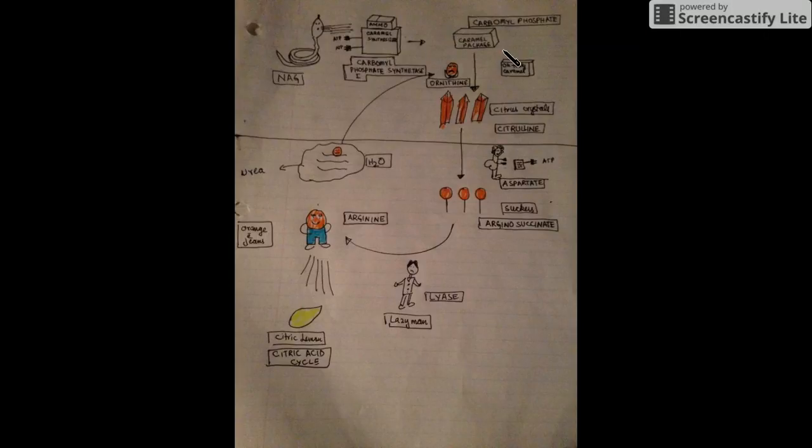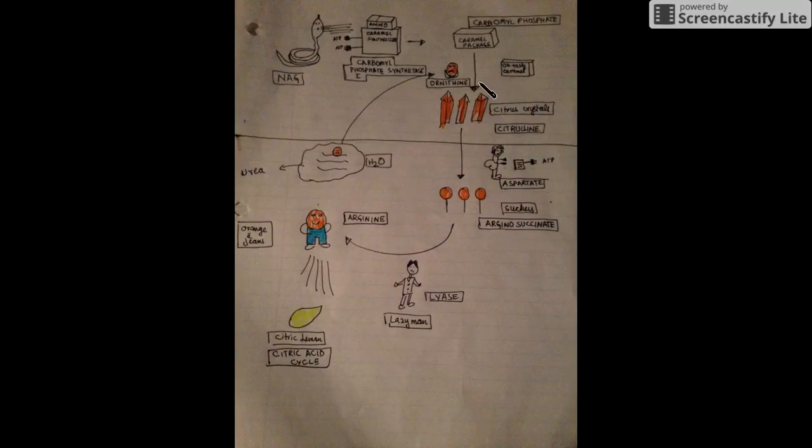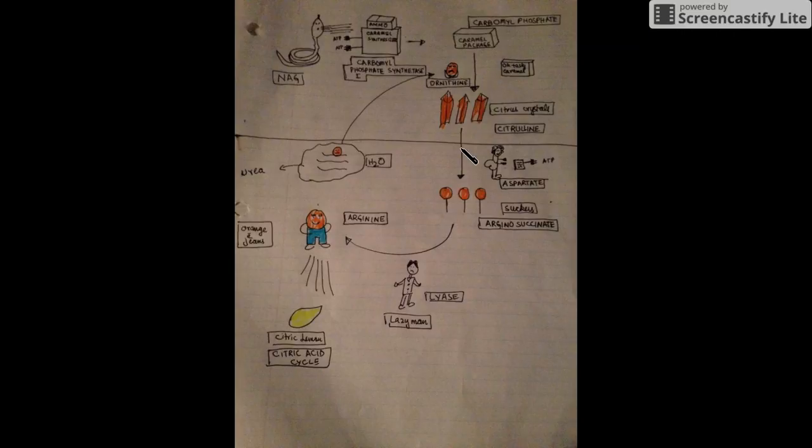Now NAG was not satisfied with the candy. He wanted to make it tastier. So what he did, in that caramel package he put a thin orange without pants in it, and I will explain why without pants I'm saying here. And he had a box, tasty caramel.